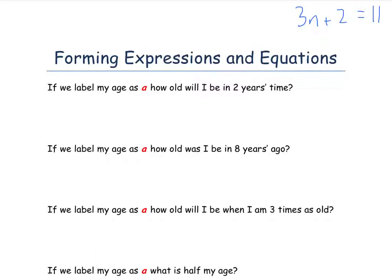If we label my age as a, how old will I be in 2 years time? So here we're told to label my age as a. Now we don't know whether I'm 27, 42, 53, 12. All we know is it is a. So how old will I be in 2 years time? Well, I will be a plus 2 years.